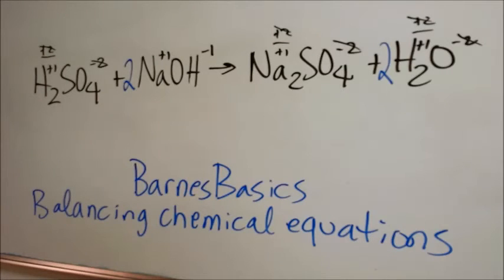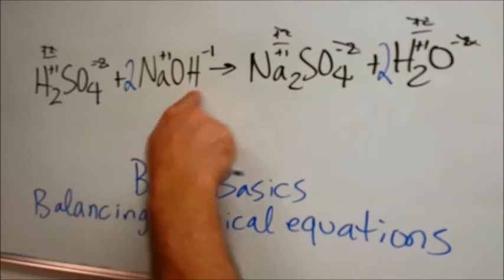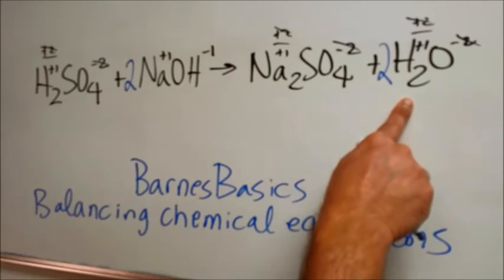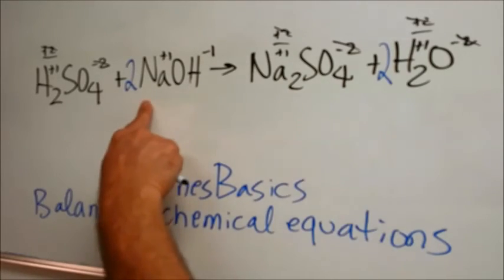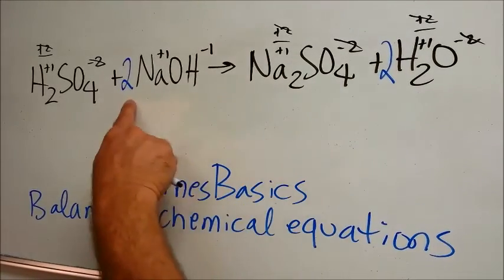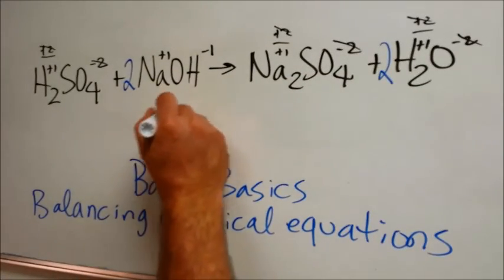Let's look at it one more time. Two hydrogens plus two hydrogens makes 2 times 2 is 4. That's fine. One sulfate, one sulfate. Two sodiums, two sodiums, two oxygens, two oxygens. Everything is good to go.